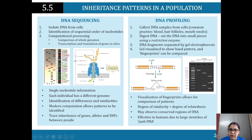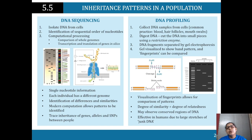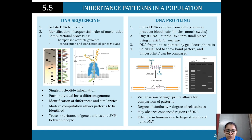Fingerprint visualization allows for comparison of patterns. The degree of similarity equals the degree of relatedness — so sample A is less related to the marker compared to C. There is a correlation but it is not causation; it doesn't give direct proof that C is the culprit. We may observe conserved regions of the DNA, and in humans this is effective due to large stretches of junk DNA, which contributes to the uniqueness of individual DNA.